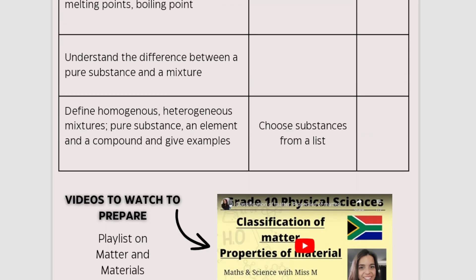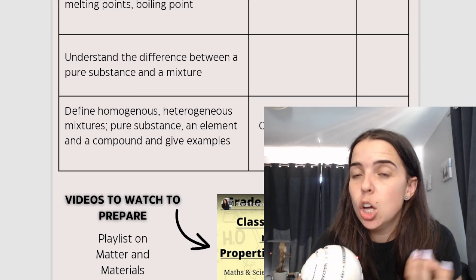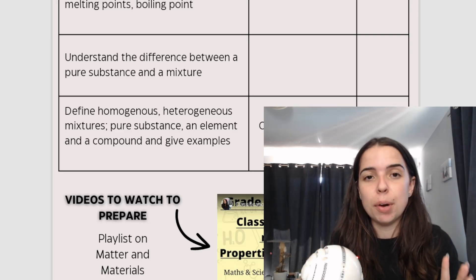You also understand or look at what is the difference between a pure substance and a mixture. So a pure substance is basically either an element that you see on the periodic table like hydrogen or oxygen or iron, so all the elements in the periodic table, or compounds.